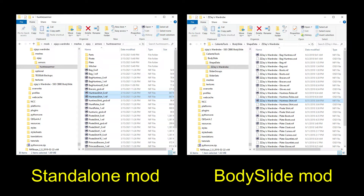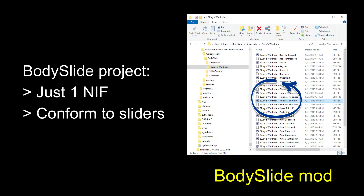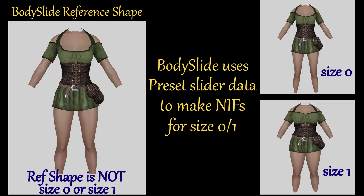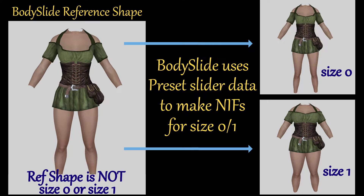The main points to remember: if you are working on a BodySlide project, you have just one NIF — the reference NIF saved in the shape data folder. You'll be editing that NIF and conforming it to the new reference body sliders for it to work properly in BodySlide. If you are working on a standalone outfit to put directly into a mod folder for Skyrim, you'll need to edit both the size 0 and size 1 NIFs. BodySlide uses the single reference NIF to create both sizes when you build within the application.